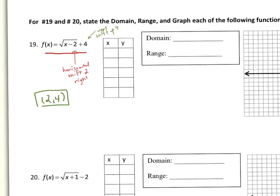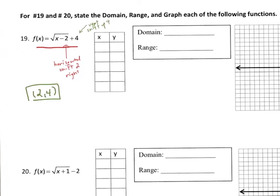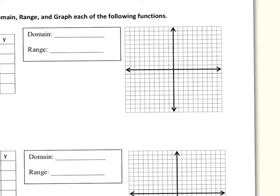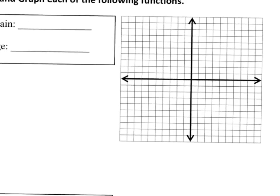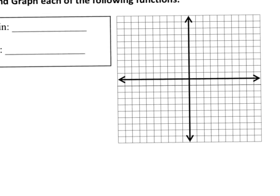Starting at two, four and graphing a typical square root shape: square root of one is one, square root of four is two, so the graph increases from that starting point. Going up and to the right, the graph looks like a standard square root curve shifted to start at two, four.